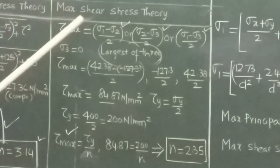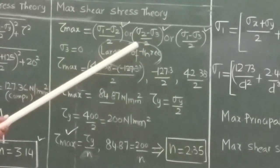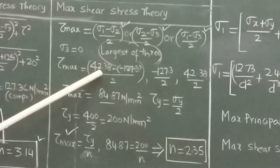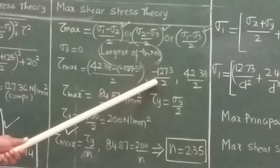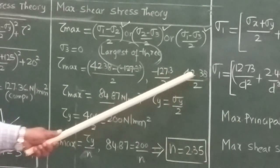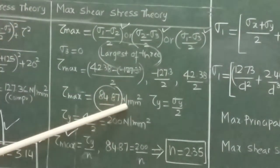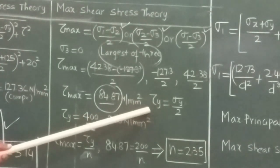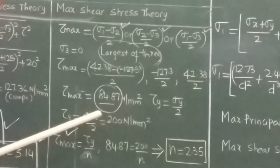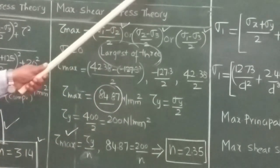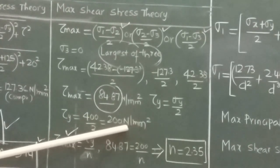At this point we assume σ₃ is zero. Finding the three values and taking the largest: since σ₂ is compressive, minus minus becomes plus, and σ₃ is zero. We get the maximum shear stress as 84.87 N/mm². The shear stress at yield point equals yield stress divided by 2, which gives 400/2 = 200 N/mm².